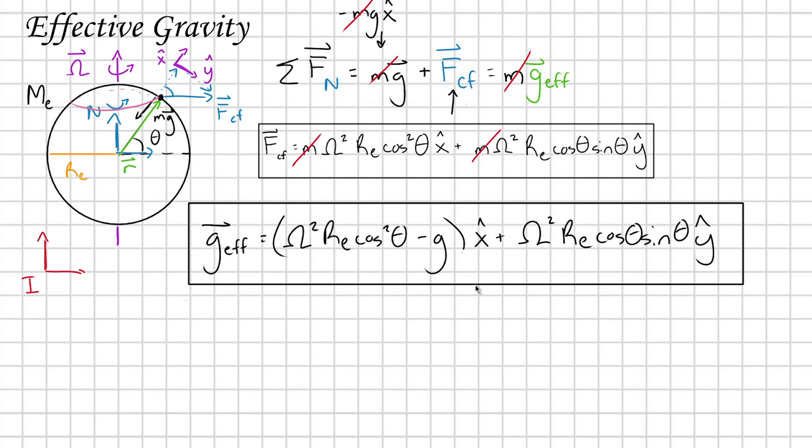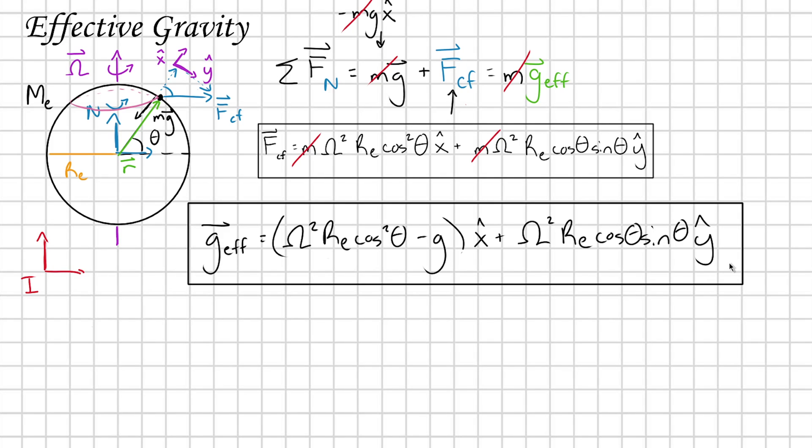Super interesting. So we can see in this result that not only my apparent gravity in line with my gravitation is changing, but I'm also now having this additional second component in this perpendicular y hat direction.